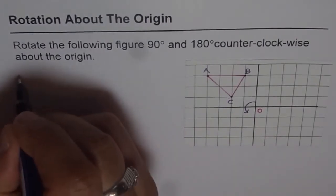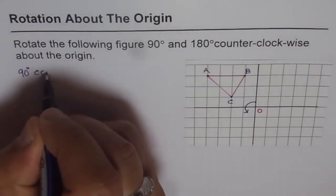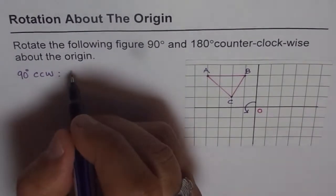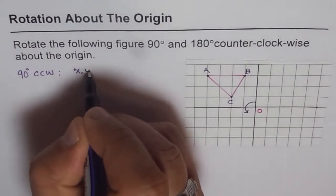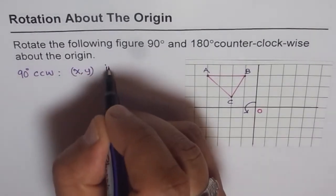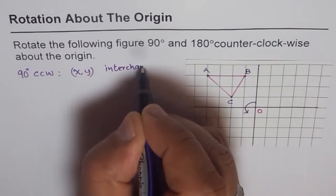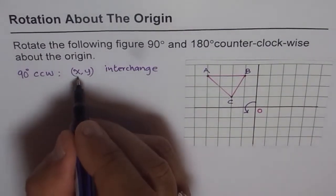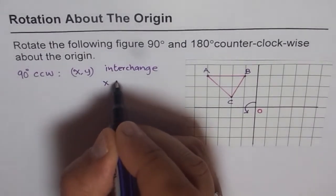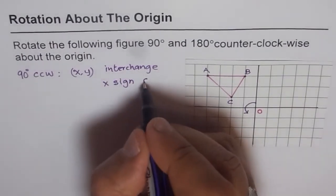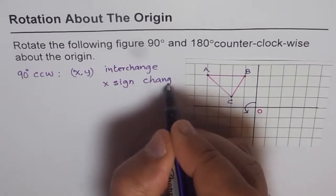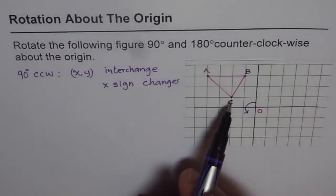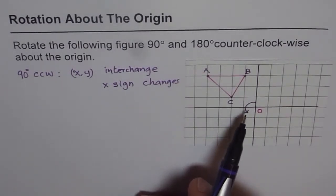When we do a 90 degrees counterclockwise rotation, what happens to the X and Y coordinates? They interchange — that is the first thing. So X and Y coordinates interchange. The second thing is, which sign changes? The X sign changes. That is the change which is going to happen when we rotate an object about the origin counterclockwise.